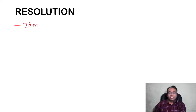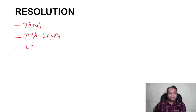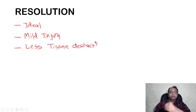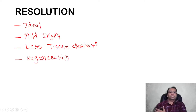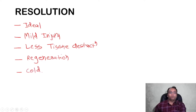Resolution is an ideal outcome seen in any acute inflammation. It is seen when injury is very mild and when there is less tissue destruction. Here the tissue destruction is very less and injury is very mild, so the involved tissue can regenerate normally to its normal architecture. There is total regeneration — the normal architecture is restored. That's why the name resolution is given. It's an ideal outcome, and it can be seen in common conditions like mild infection.